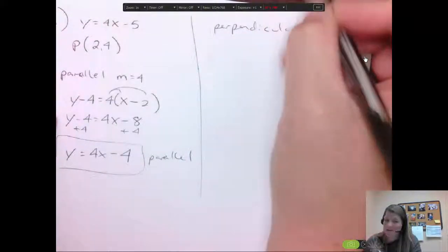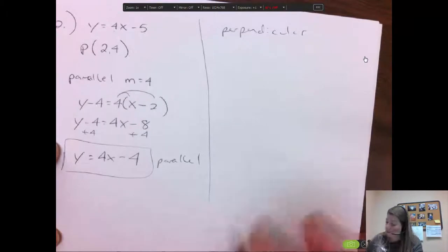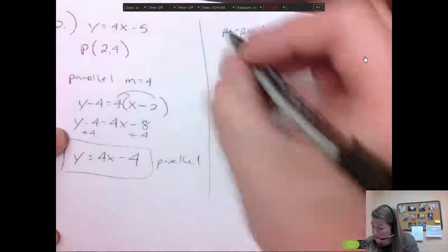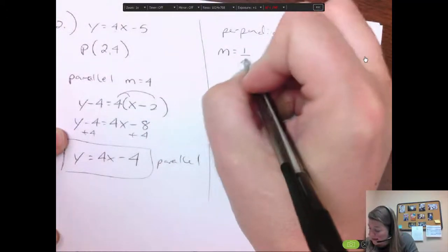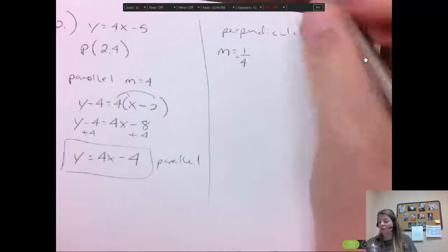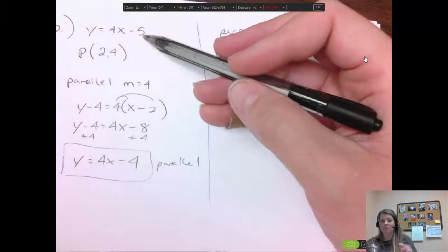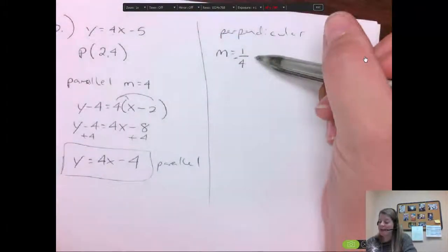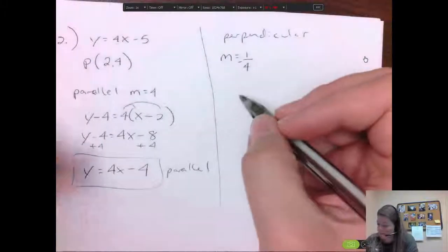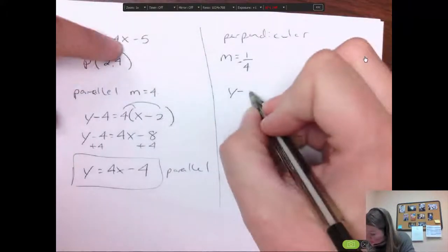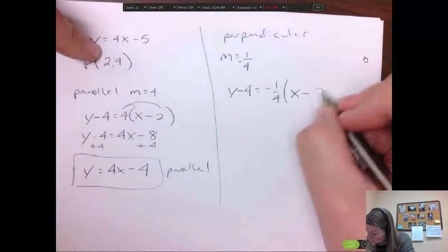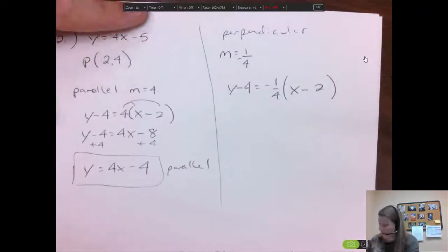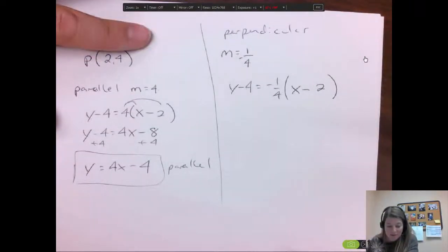So that means the slopes are flipped over or reciprocal and opposite sign. Well, we know that the slope is 4 on this original one. So the slope of a perpendicular would become 1 fourth and it would become negative. So opposite sign, the 4 was positive on this one here. So you would flip it and then make it negative. So we'll use negative 1 fourth and then I'll use the point here. So I would go y minus the 4 equals our negative 1 fourth, x minus the x, which is 2. And then I have to simplify. Or again, I could be done. It depends on if the directions tell you to write it in slope intercept form.